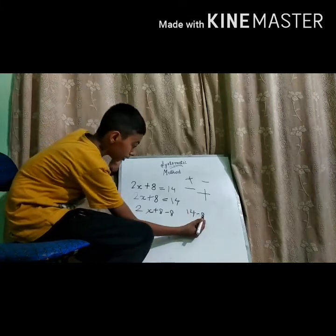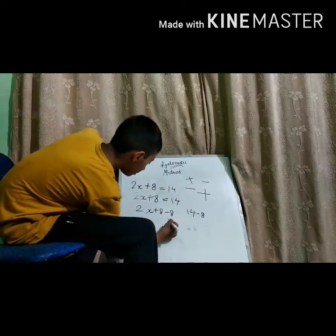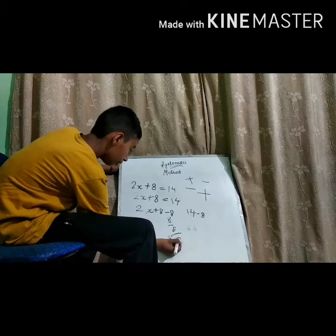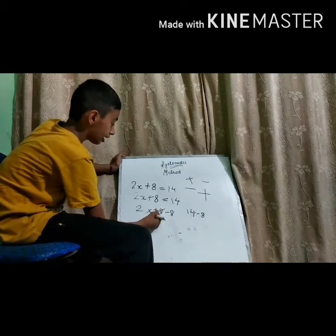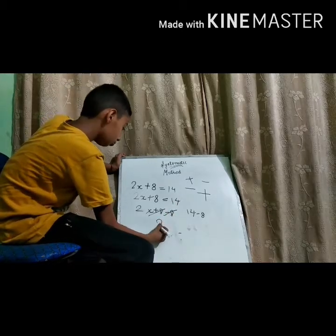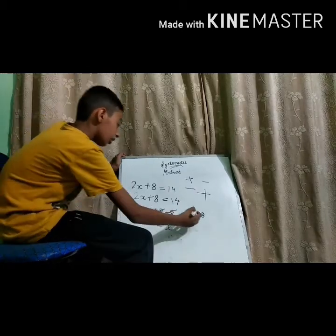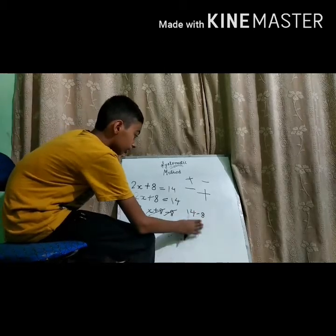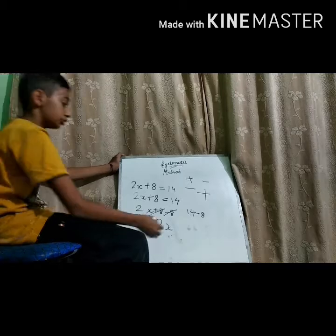We also do minus 8 on the other side. 8 minus 8 equals zero — plus 8 and minus 8 cut between them. What is left? 2x. And now on the right side, 14 minus 8 — what will come? 6.